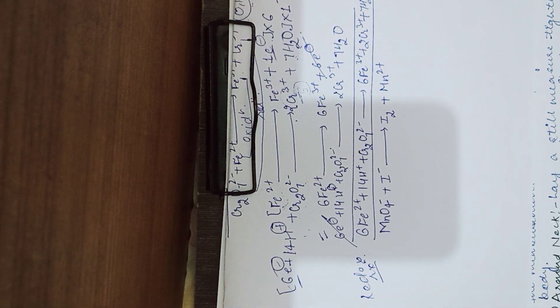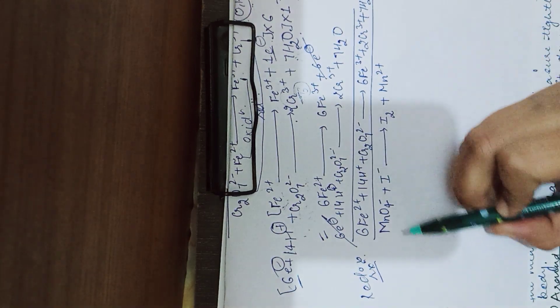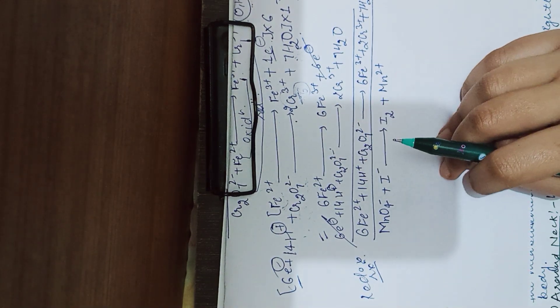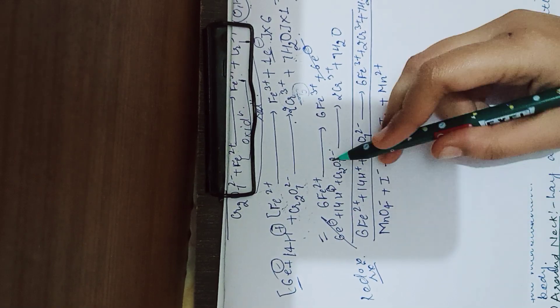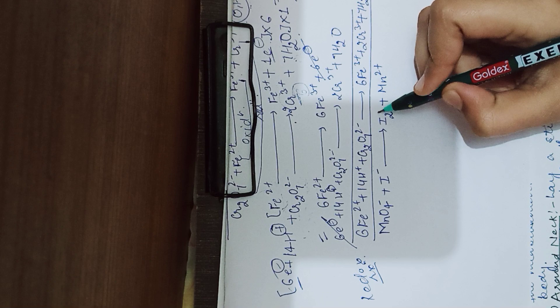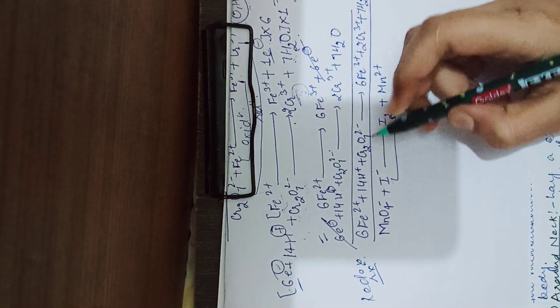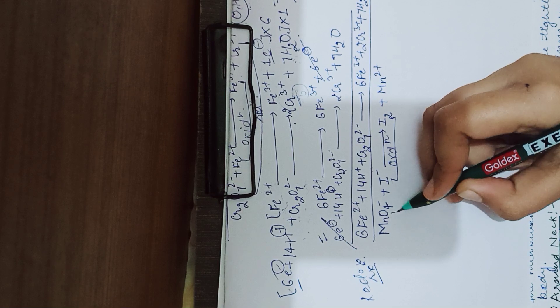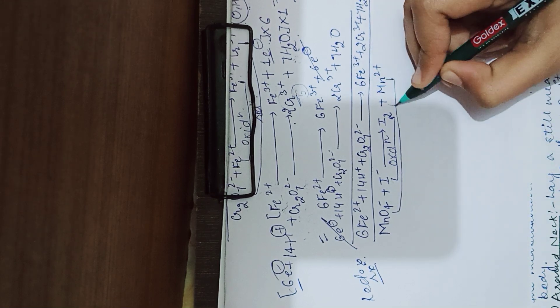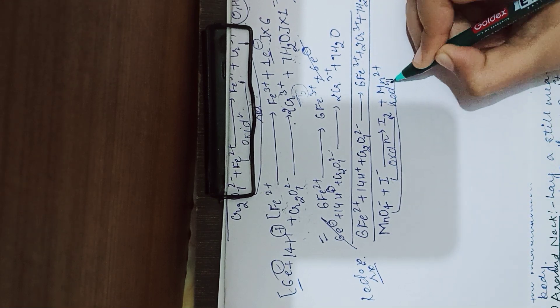So you might be familiar now how to balance it. The more examples you practice, you will be more perfect, clear? So subse pahle half cell reactions ko alag karengi, that means oxidation and reduction ko alag karengi redox mein se. This is your oxidation and this is your reduction, clear?